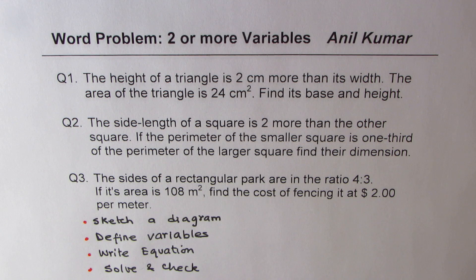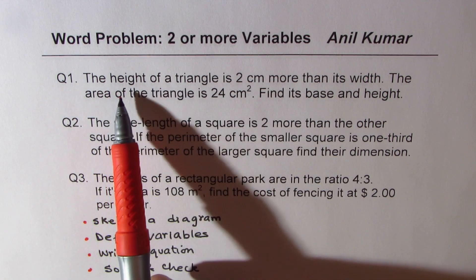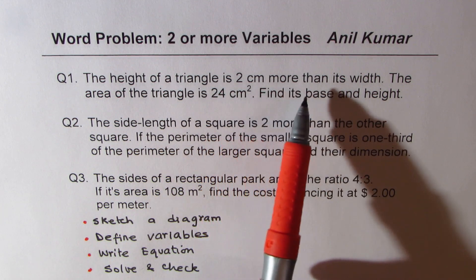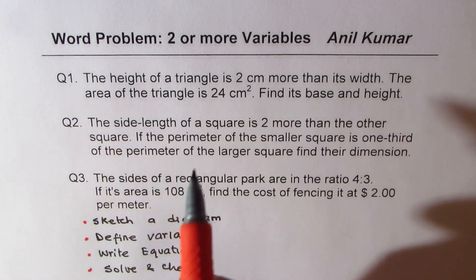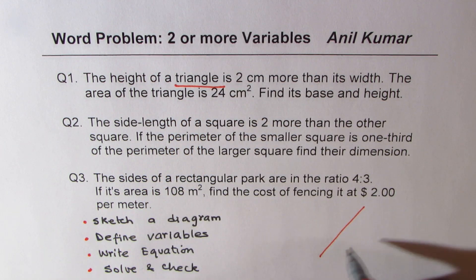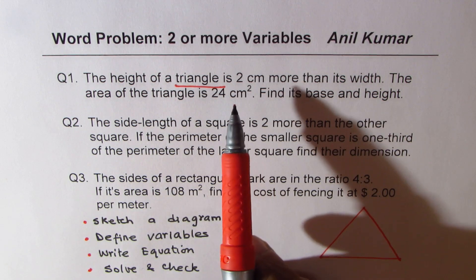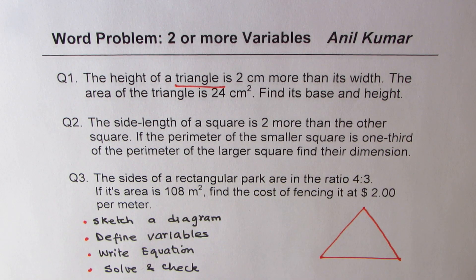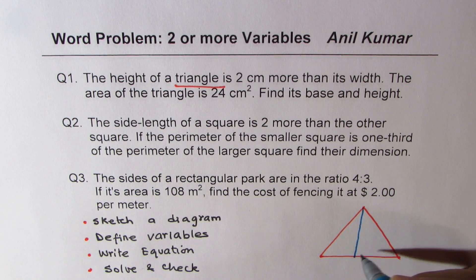To give you an example, in question number one, we have the height of a triangle is two centimeters more than its width, so we're talking about a triangle. Sketch a triangle. Then it says there is a relation between height and width — that becomes the height, H.